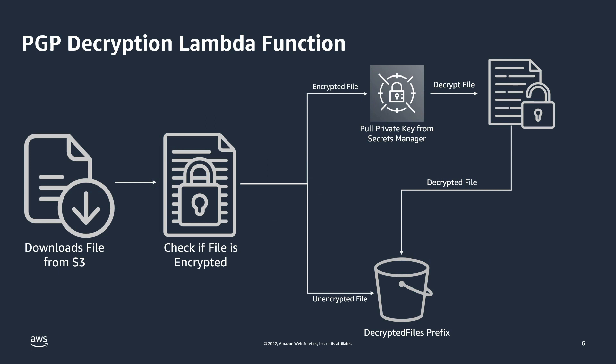The custom PGP decryption Lambda function works by first downloading the newly uploaded file from S3 and checking if the file is encrypted or not. If the file is encrypted, the Lambda function pulls the private key required for decryption from Secrets Manager and performs the decryption. Once decrypted, the file is moved to the S3 prefix named decrypted files, and a success message is sent back to the managed workflow using the send workflow step state API. Once the workflow receives the success message, it continues with the next step. If decryption fails for any reason, the Lambda function reports the failure and the exception handling steps are invoked.